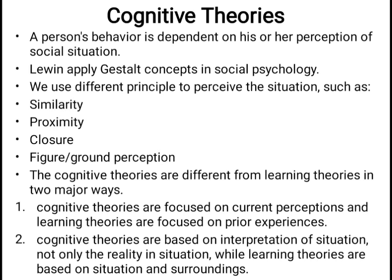The next theories are cognitive theories. Cognitive theories are based on an individual's perception of social situations — how we perceive it, meaning our cognitive processes are involved. Lewin used gestalt principles in social psychology. According to Lewin, we use similarity, proximity, closure, and figure-and-ground perception to interpret events and form our image about events. The basic purpose of cognitive theories is that our social behavior is dependent on our cognitive processes — the way we think and perceive determines how we behave.